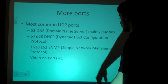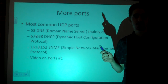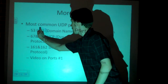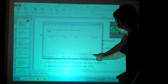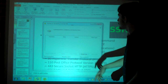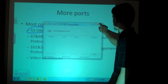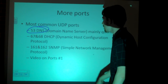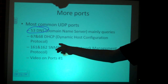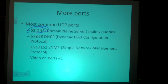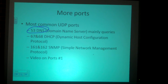Port 53 — when you're doing a DNS lookup, it goes to port 53 on UDP. DNS is on both TCP and UDP. DNS queries — when you request the IP addresses — get sent over UDP port 53.